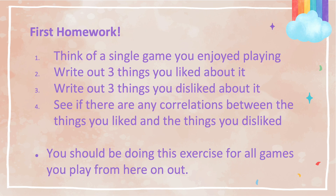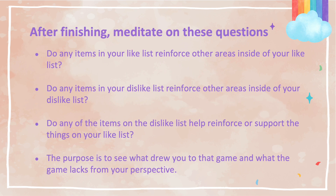Here is your very first homework for the series. Think of a game — it can be any game. Then think of three things you liked about it. Afterwards, think of three things you did not like about it. Take your time when answering these questions, but answer each question with as few words as possible. When you pick three things you liked and three things you didn't like, ask yourself these questions: Do any items in your like list reinforce other areas inside of your like list? Do any items in your dislike list reinforce other areas inside of your dislike list? Do any of the items on the dislike list help reinforce or support the things on your like list? The purpose is to see what drew you to that game and what the game lacks from your perspective.